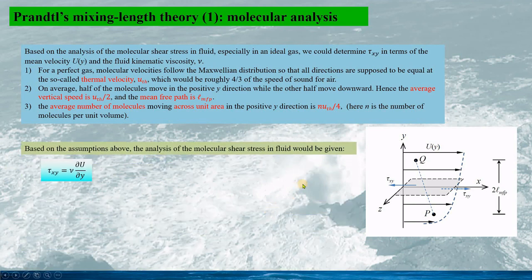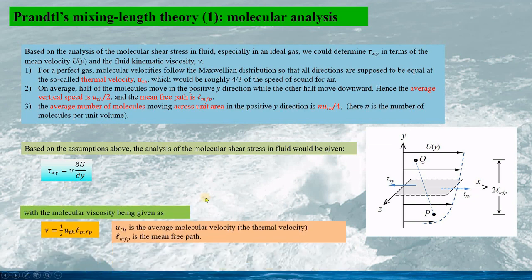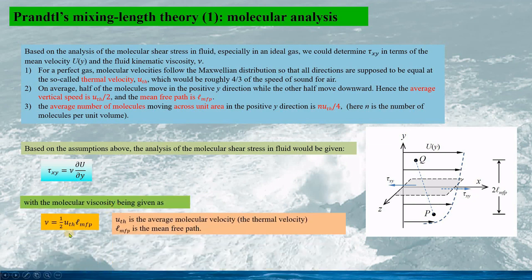Based on the assumption, the analysis of the molecular shear stress in fluid would be given by tau_xy equals nu times the gradient of u with regard to y. The molecular viscosity is given by this formula, here u_th is the average molecular velocity or the thermal velocity, L_mfp is the mean free path.